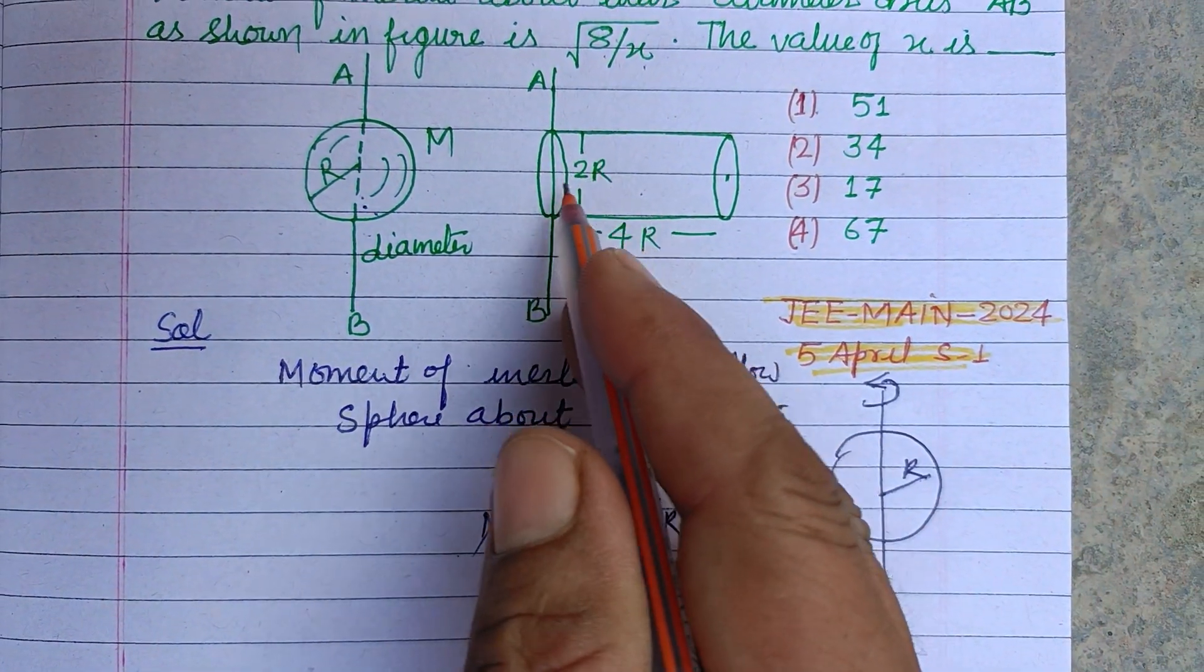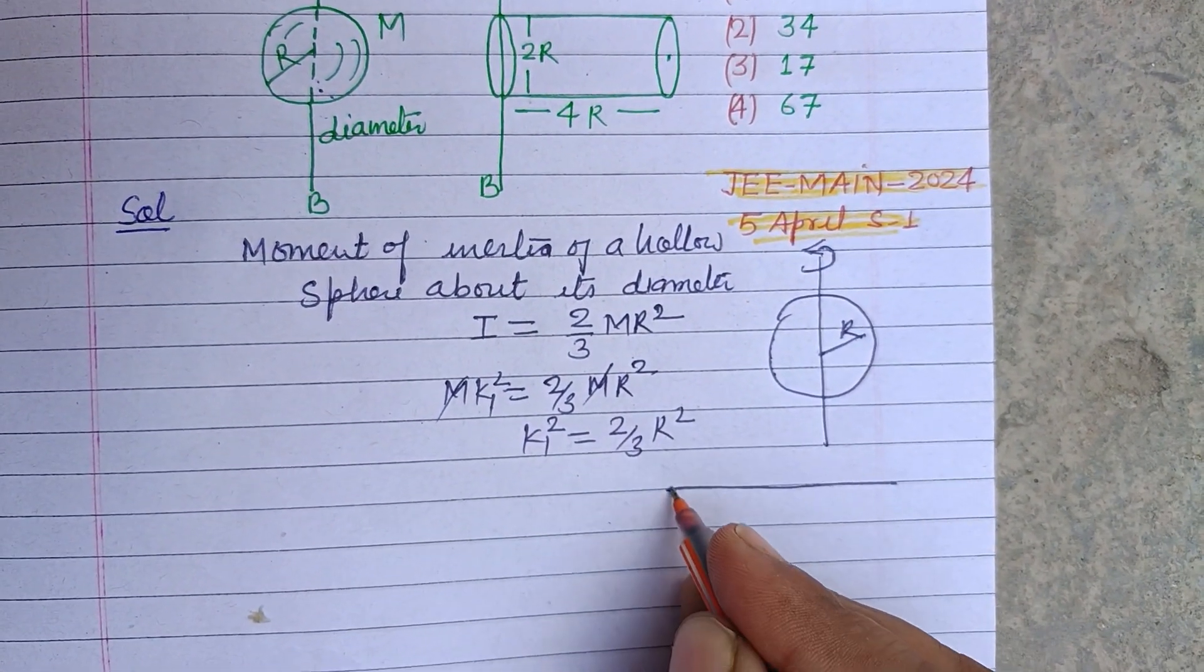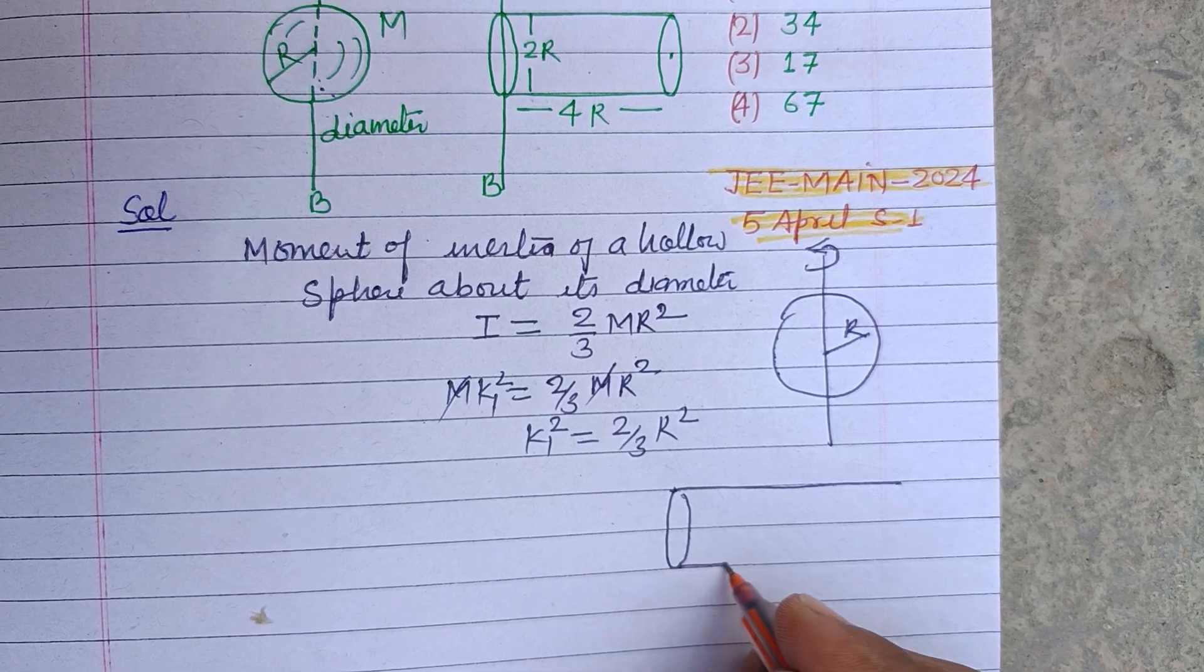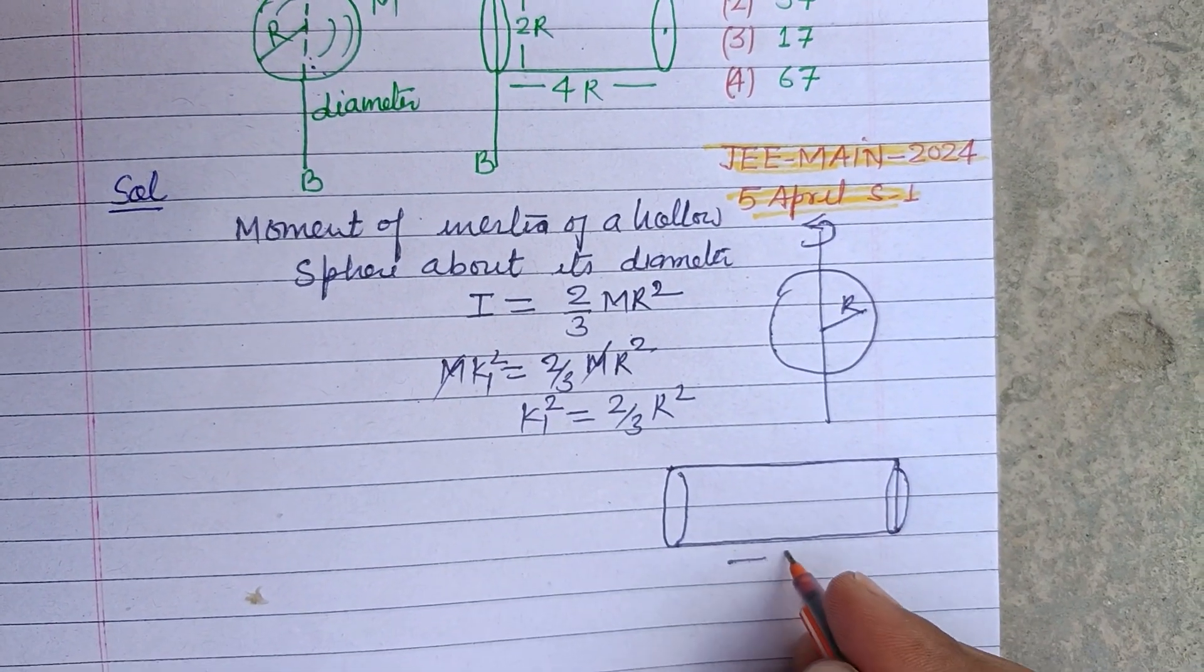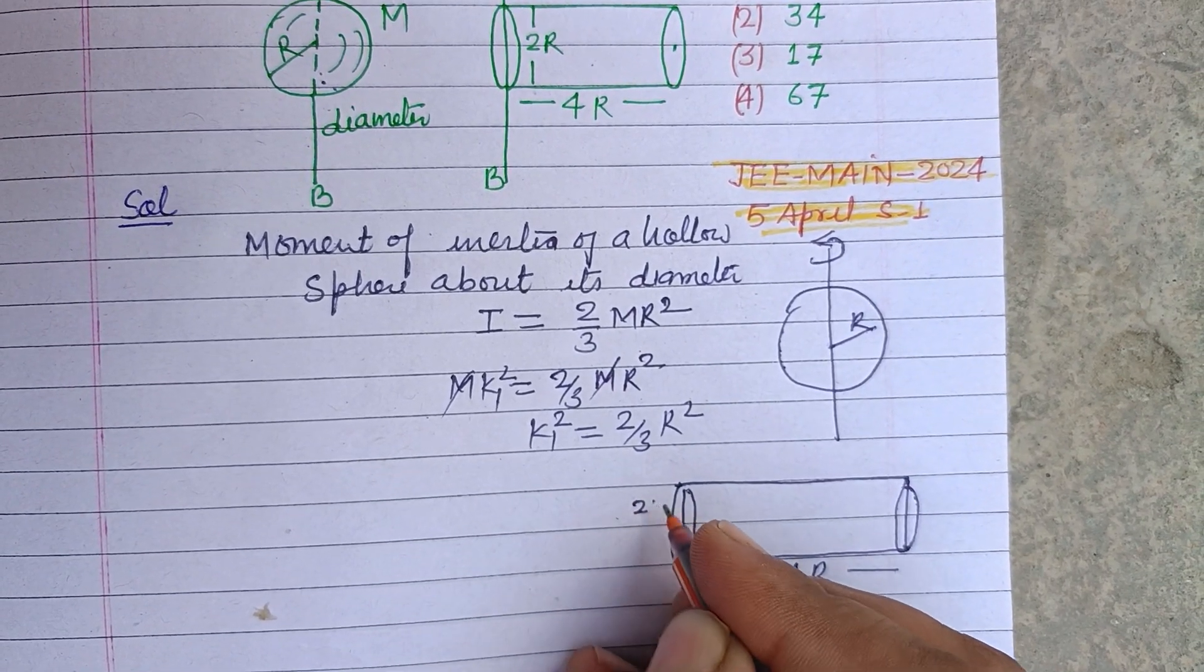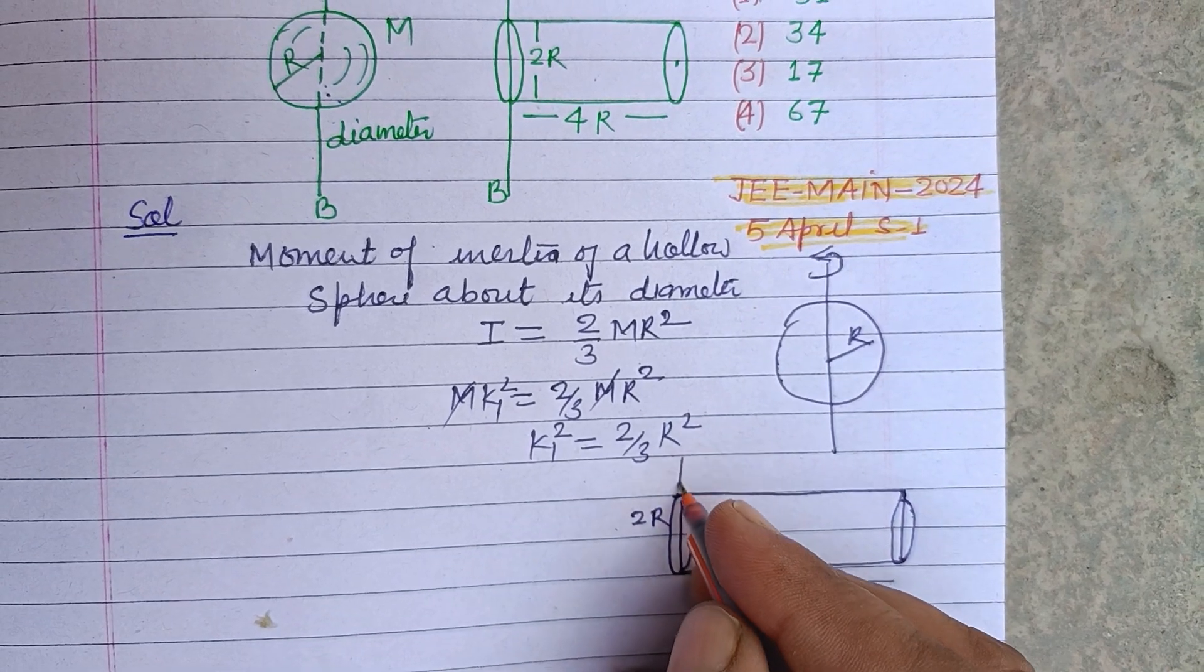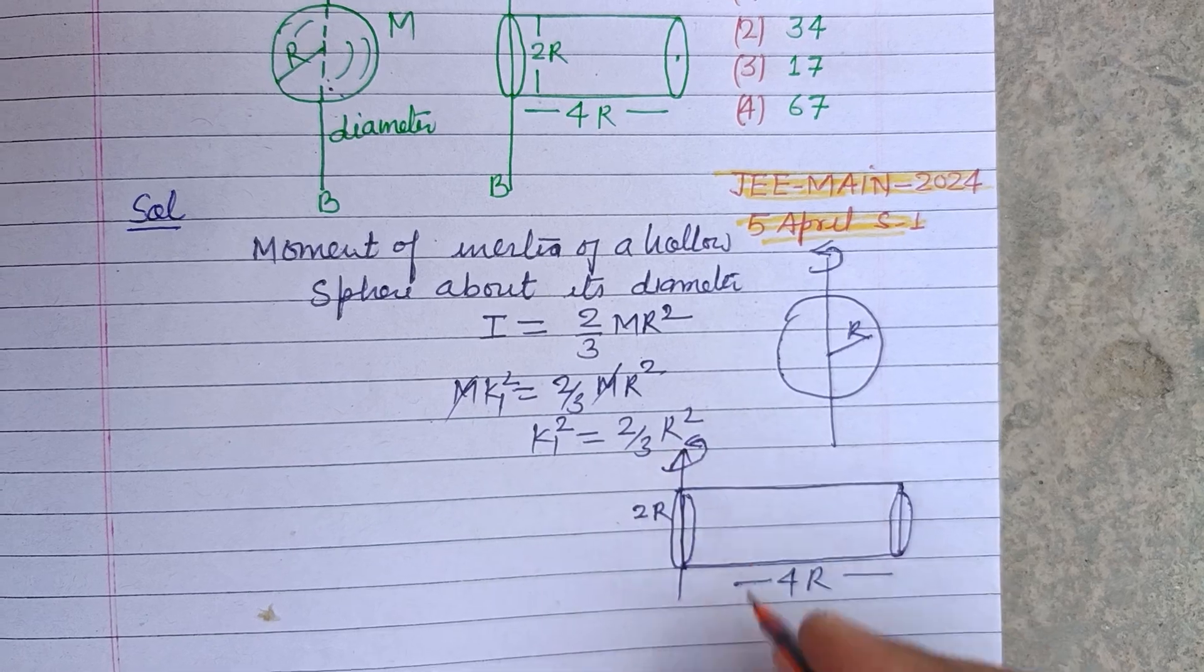Now for solid cylinder, here solid cylinder is given. Its length is 4R and radius, and diameter is 2R. Here we take this end as axis of rotation AB.